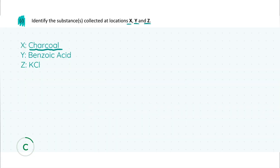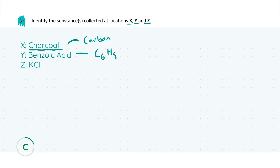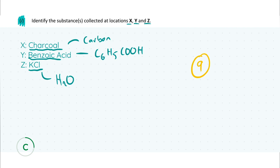To summarize Part i: at X you'll find charcoal (also acceptable: carbon); at Y you'll find benzoic acid (formula: C6H5COOH); at Z you'll find KCl (potassium chloride) — water is also acceptable at Z since vacuum filtration separates everything except the benzoic acid crystals, leaving water as a byproduct. There were nine marks total: three marks for each correct location.